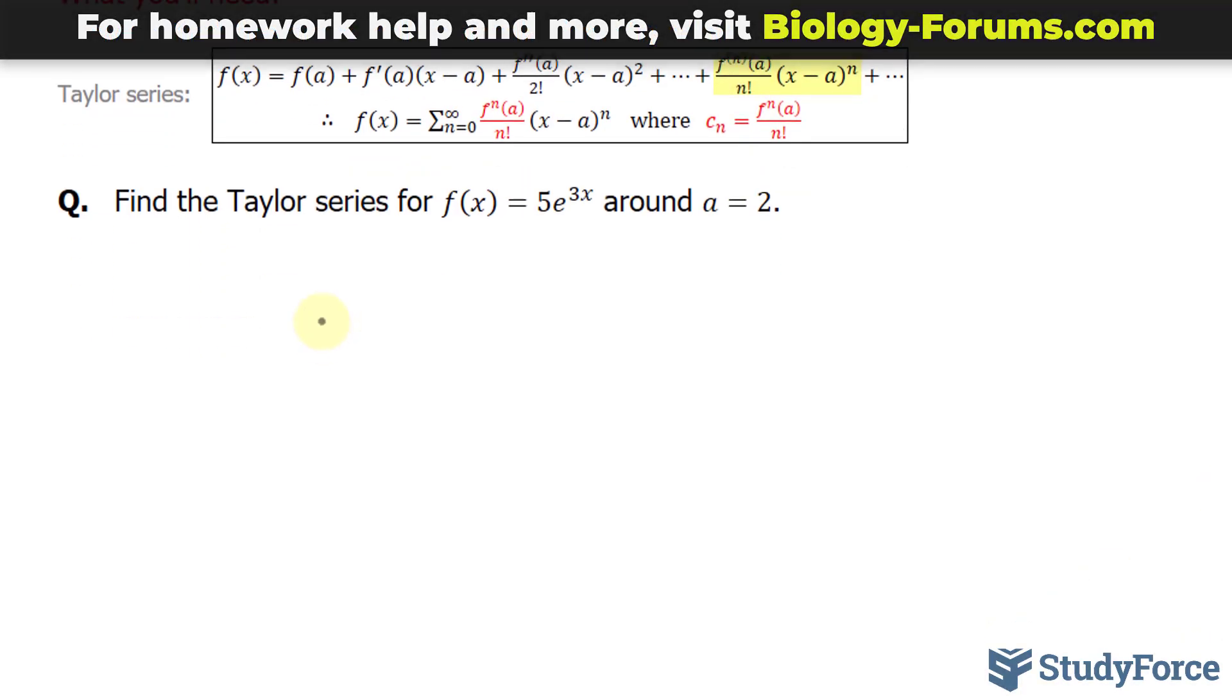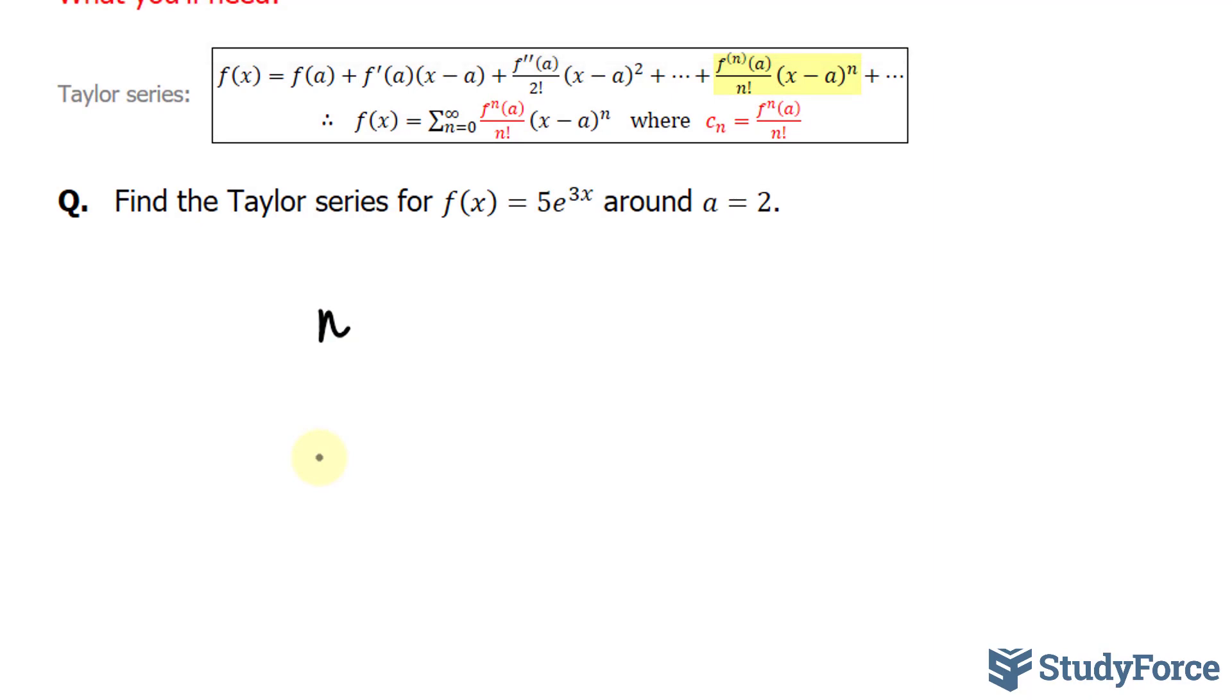So my chart will look like this. My first column will represent n for the number of derivatives. n = 0 represents the function itself without being derived. The first derivative, second derivative, and I'll stop at that. My next column will be the function derived, and my last column will be the function derived at a. I'm only doing this to organize my work.